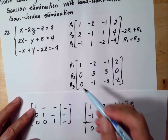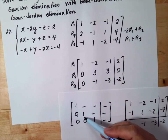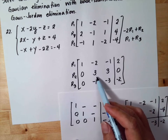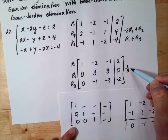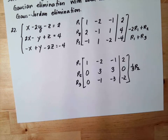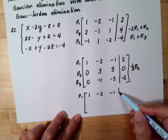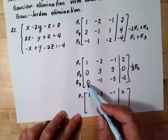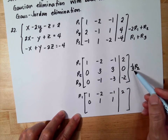Our next goal is to make the second pivot equal to 1. We can divide row 2 by 3. So we apply one-third of row 2: 0 ÷ 3 = 0, 3 ÷ 3 = 1, 3 ÷ 3 = 1, 0 ÷ 3 = 0. Row 1 remains unchanged.